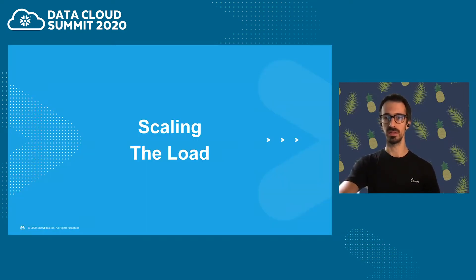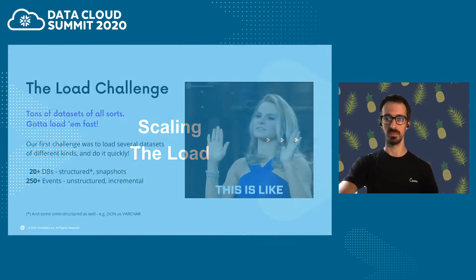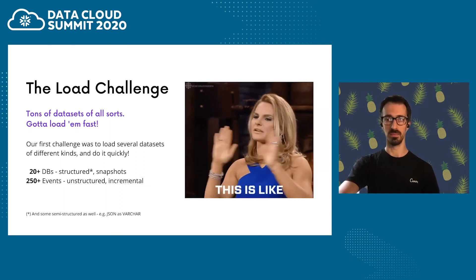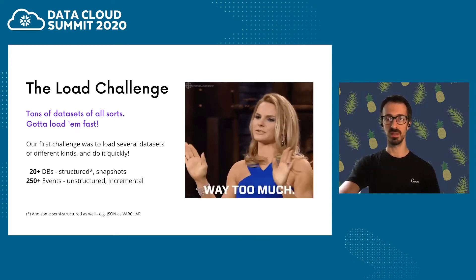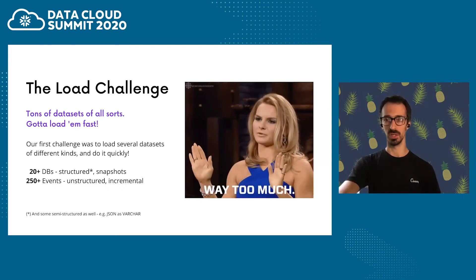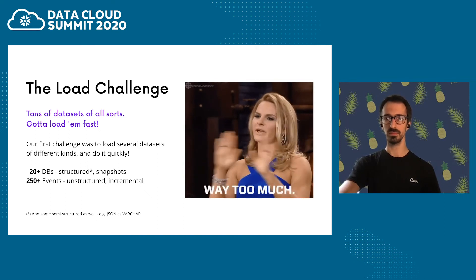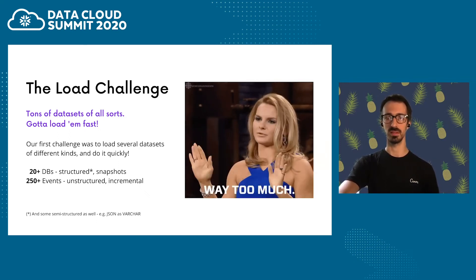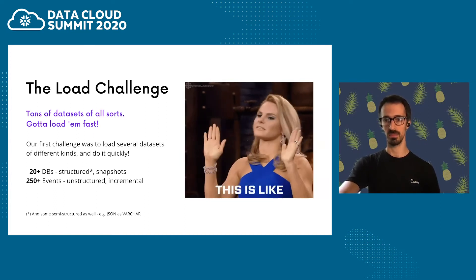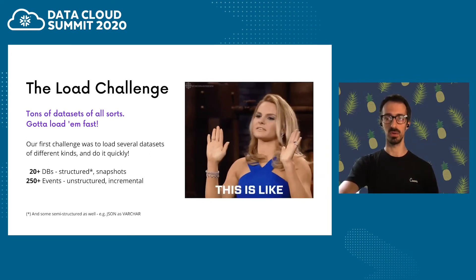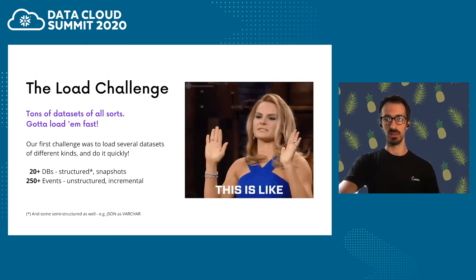Moving on, we will talk about scaling problems — what were the challenges we faced and how we solved them. We have been using Snowflake for about a year now. The first challenge we faced when we started the migration was the load. The data sets that we needed to ingest were way too many and way too different. Today, we have more than 20 databases and more than 250 event streams connected to our warehouse. Although the number of sources a year ago were obviously less than nowadays, we knew we had to build a solution pipeline that would scale.